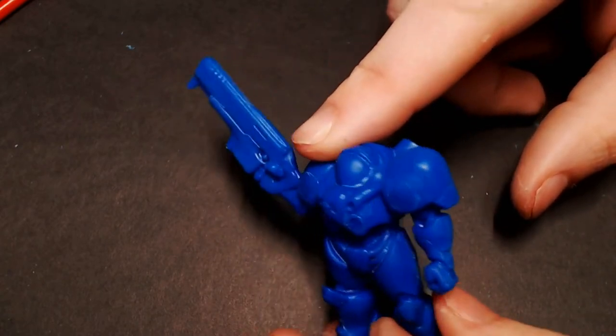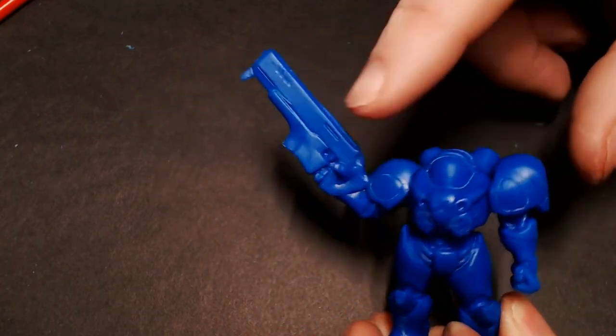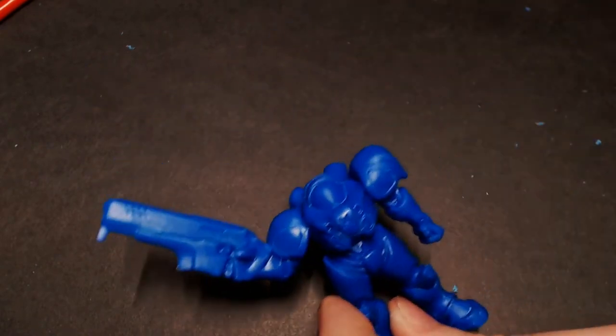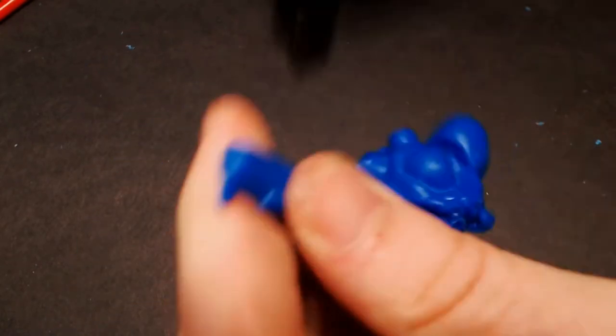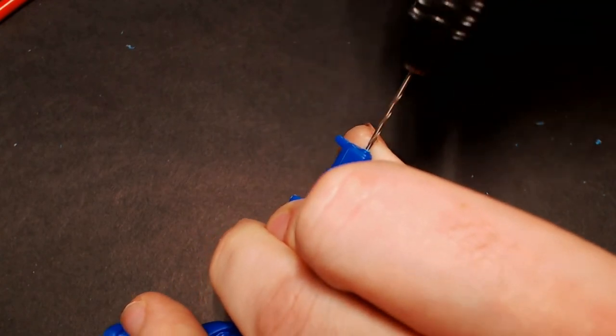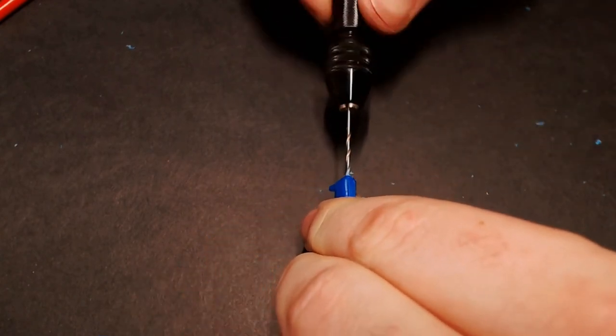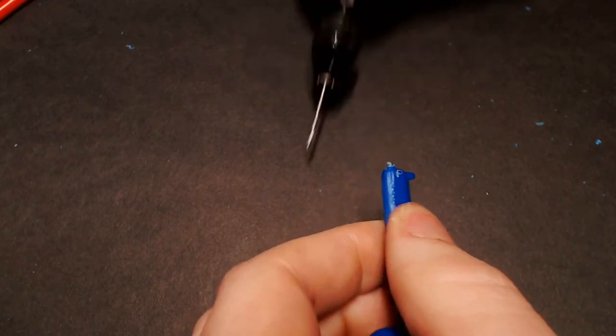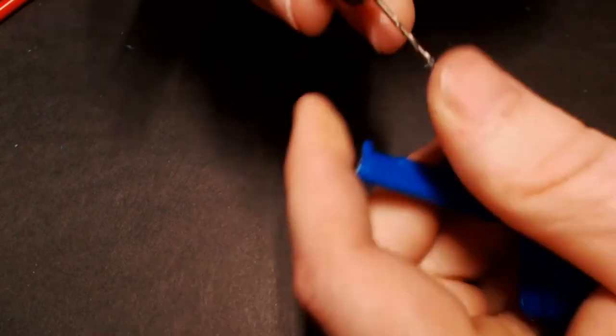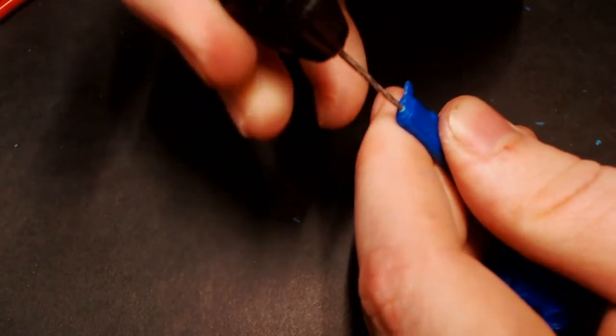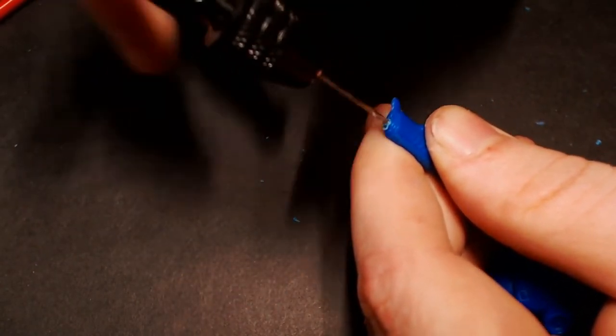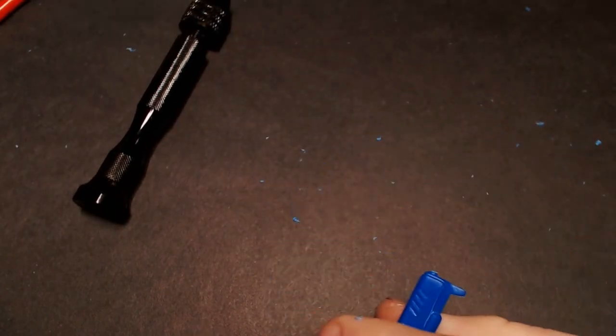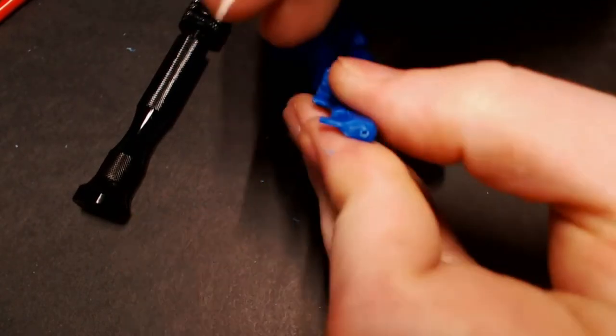So here it is. We've got all of our details kind of scribed in a little bit deeper. You can see I've gone around some of the larger details like the gun and the hands and the head area and scribed those in. And next we're going to use our little pin vise to drill out the barrel and some of our other little circular style details like there's some ports and some exhaust things around the armor that we're going to kind of use our hobby drill to deepen and countersink so that those holes are a little bit more crisp and clean.